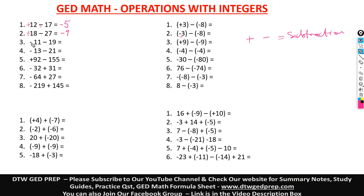When we have a negative and a negative number — the same signs — we do addition. So when you add 11 and 19, what do we have? We have 30. And 30 takes the sign of the bigger number, which is negative.